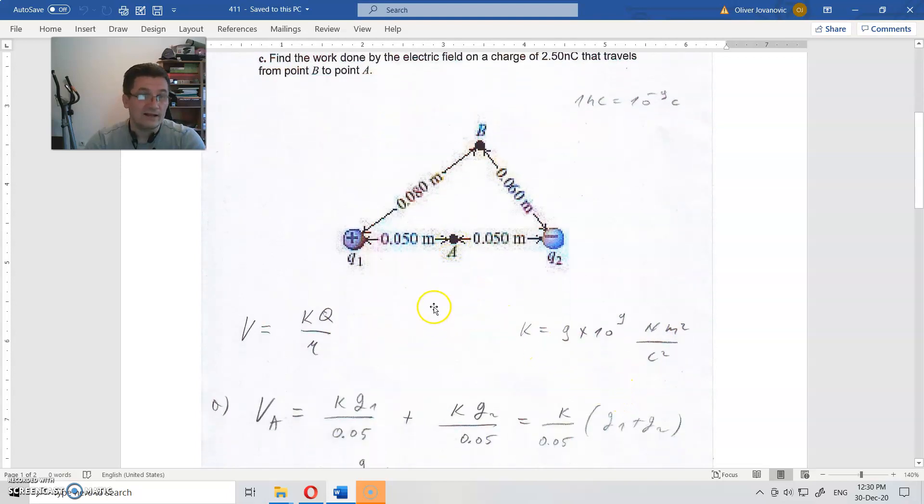It is scalar and additive. So potential at this point is potential due to this first charge, and then potential due to second charge.